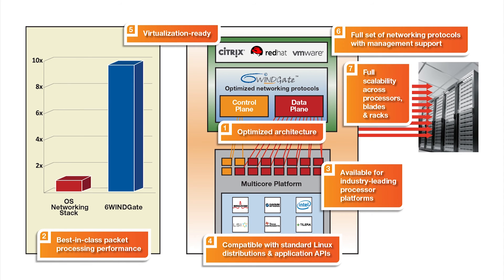Very importantly, the 6Wingate architecture ensures that networking performance scales linearly with the number of cores configured to run the data plane. And if necessary, these cores can be distributed across multiple processors, multiple blades, or even multiple racks.